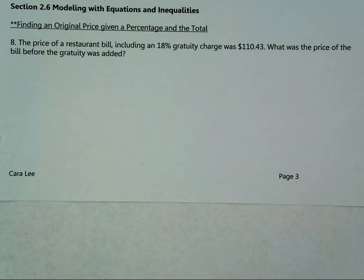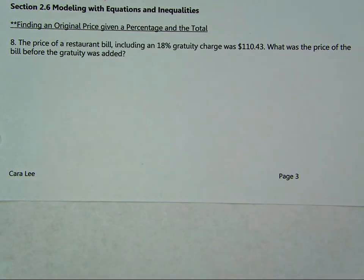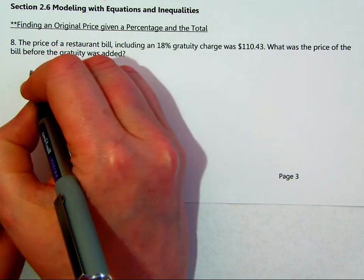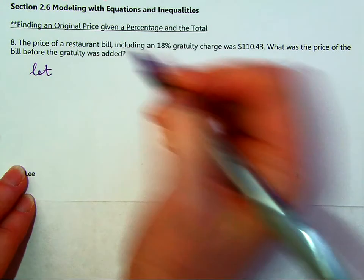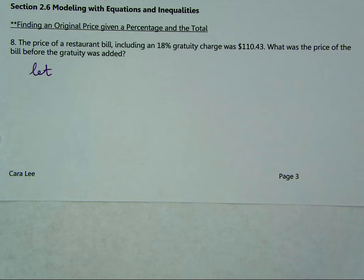We know the total bill. Let me show you a different way to look at this one, which you'll see in section 2.6. If there's something we don't know, we're going to use a variable — that's algebra, right? We let a variable represent what we don't know. I want it to represent the original amount. How about B for bill? Let's do B for bill.